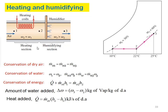Applying conservation of mass and energy: for dry air, ṁ_a1 = ṁ_a2 = ṁ_a3. For water, ω₁ = ω₂ (no moisture change in heating section), then ṁ_a2·ω₂ + ṁ_f = ṁ_a3·ω₃, where ṁ_f is the mass flow rate of water added. For energy conservation, q̇ + ṁ_a1·h₁ = ṁ_a2·h₂.